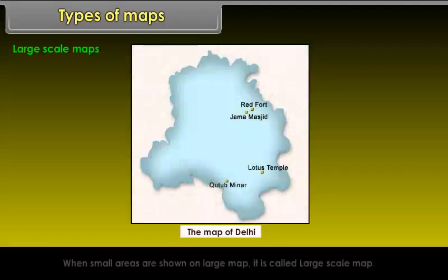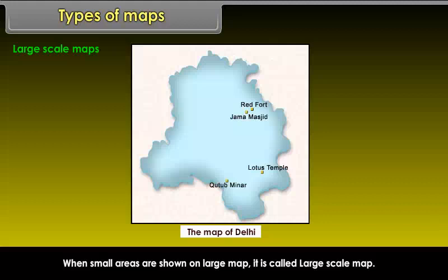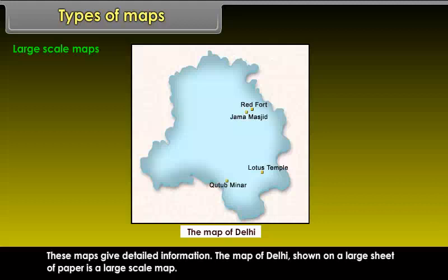Large Scale Maps: When small areas are shown on a large map, it is called Large Scale Map. These maps give detailed information. The map of Delhi, shown on a large sheet of paper, is a large scale map.